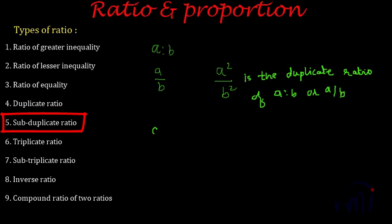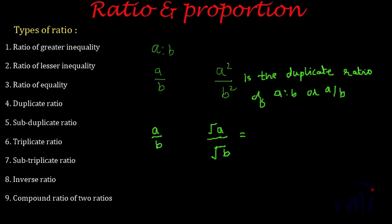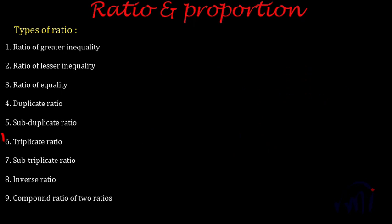The fifth type is the sub-duplicate ratio. If you have a ratio A is to B, then the square root of A is to the square root of B — which can be written as A to the power 1/2 is to B to the power 1/2 — is the sub-duplicate ratio of A is to B.